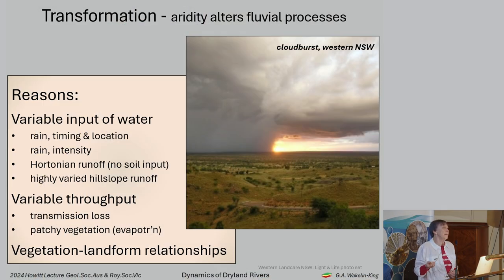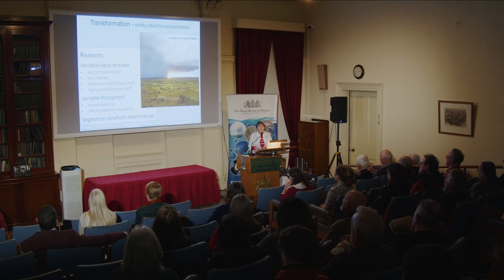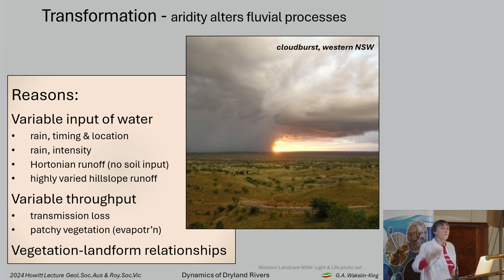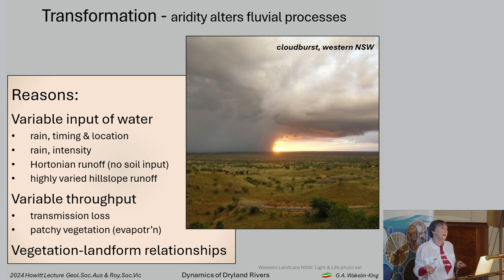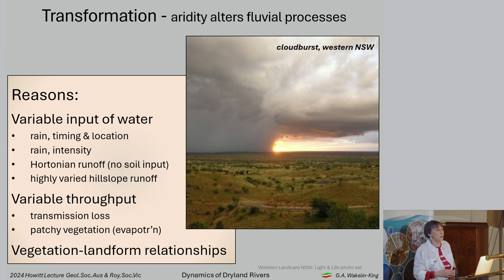The hill slope also has a very varied runoff coefficient. There is also variable throughput: as a flow event travels down the drainage network, the volume of water starts getting smaller and smaller as water is abstracted into the channel bed, the banks, or taken up by trees. Throughput is made even more variable because the patchy distribution of vegetation means evapotranspiration is also patchily distributed across the landscape.